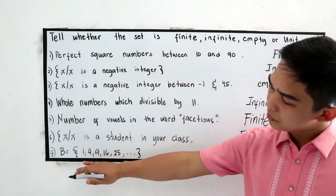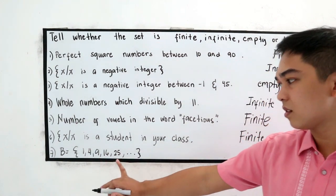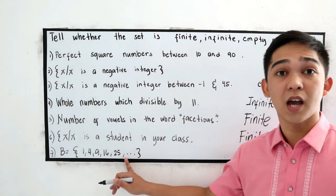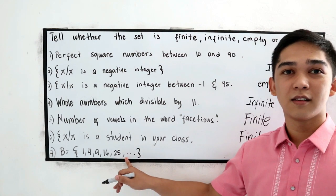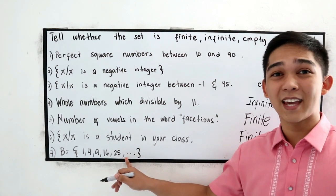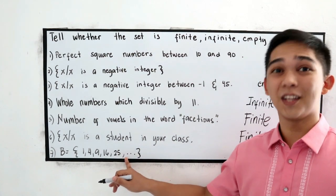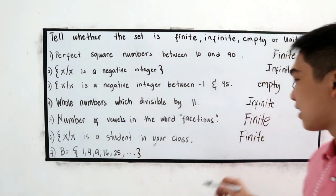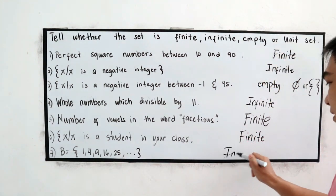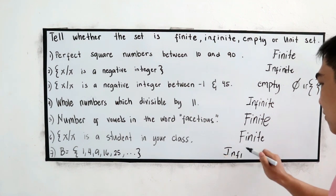B is equal to 1, 4, 9, 16, 25 and so on. This is the ellipse sign. The ellipse sign indicates infinity. So this is infinite.